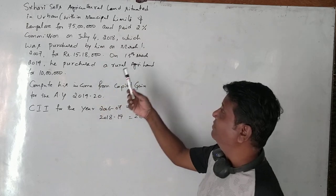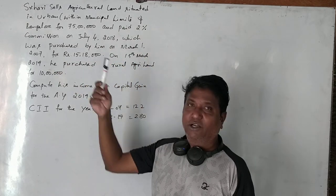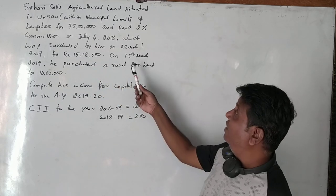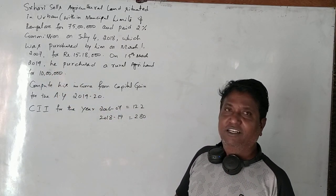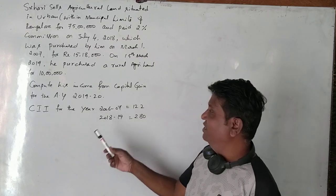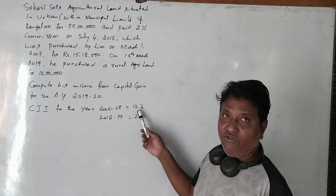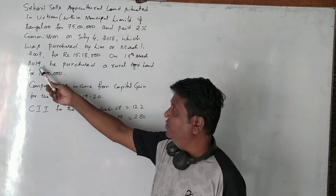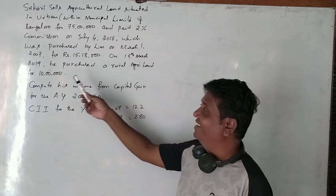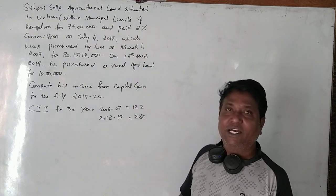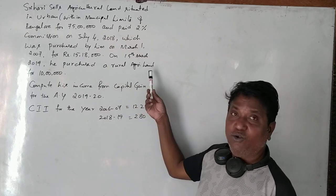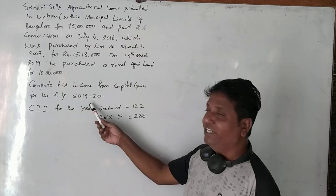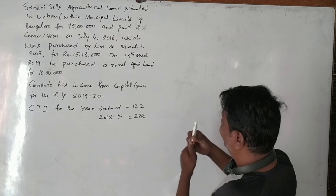This agricultural land was purchased by him in March 2007 for rupees 15 lakhs 18,000. The Cost of Inflation Index (CII) for 2006-07 is clearly given in the question as 122, and the CII for 2018-19 is also given. On 15th March 2019, he purchased a rural agricultural land for 10 lakh rupees. We have to compute his income from capital gains for assessment year 2019-20.